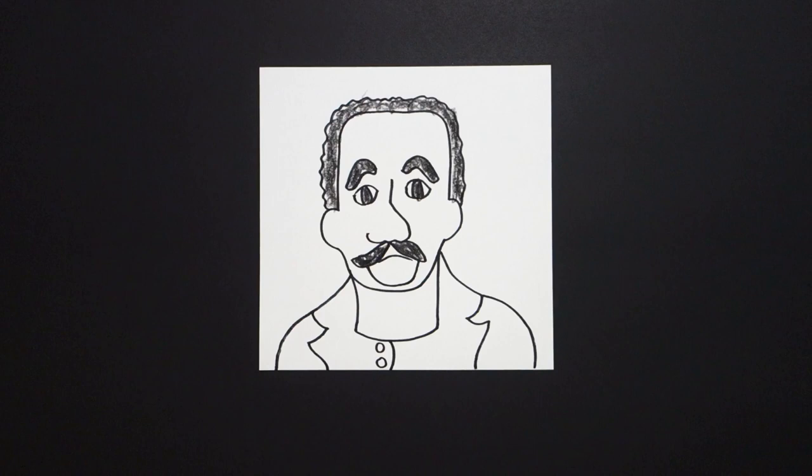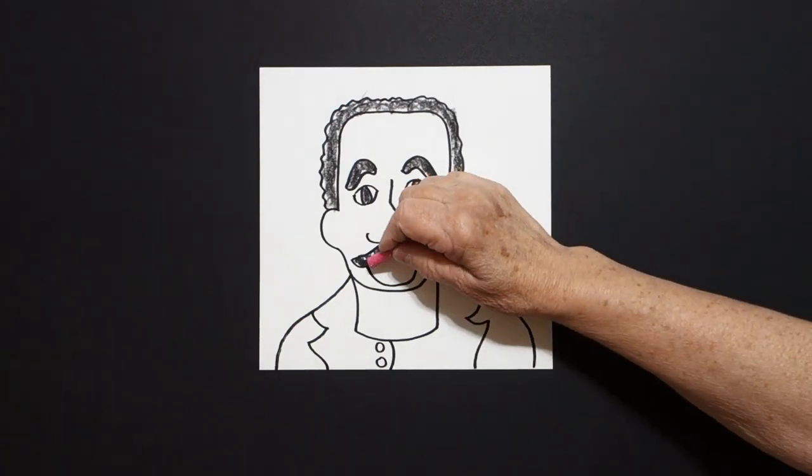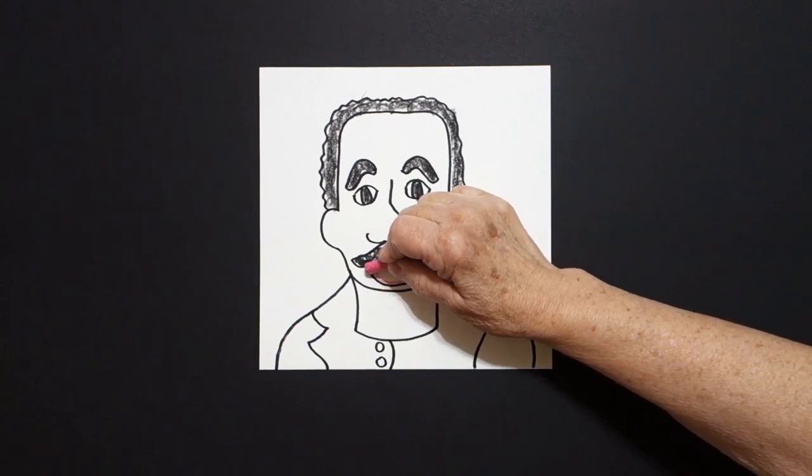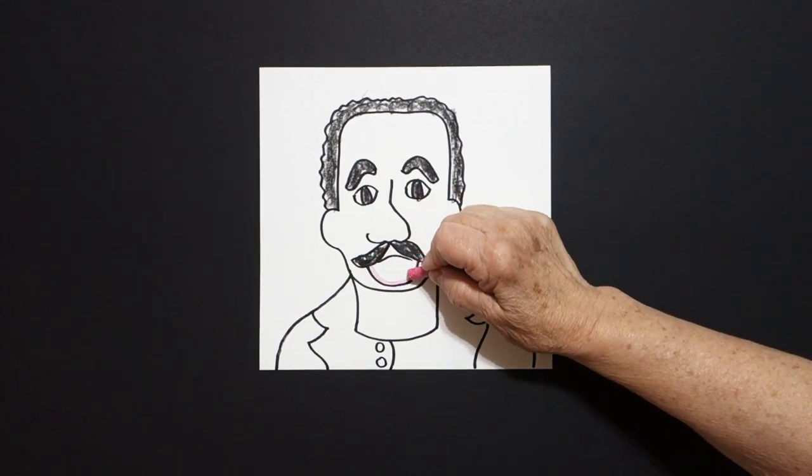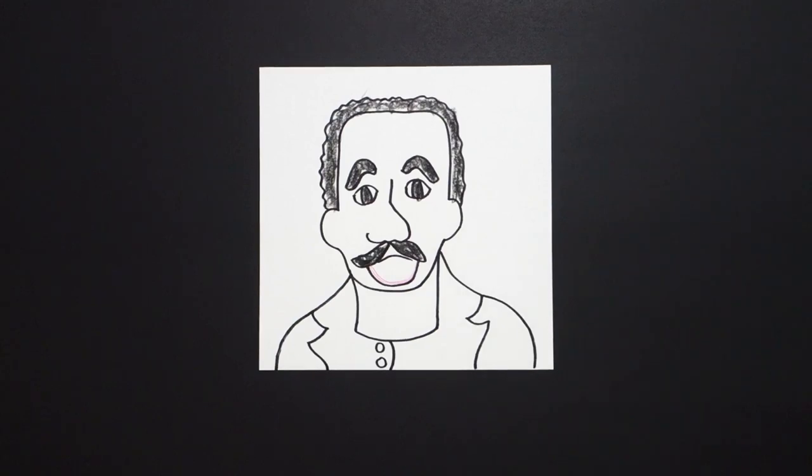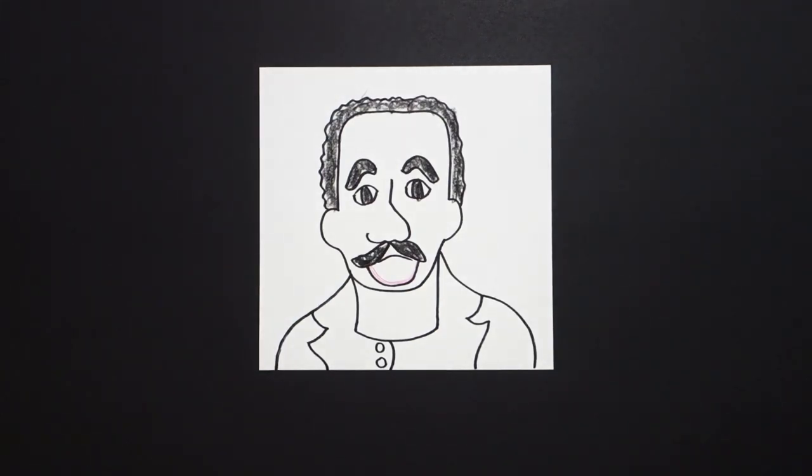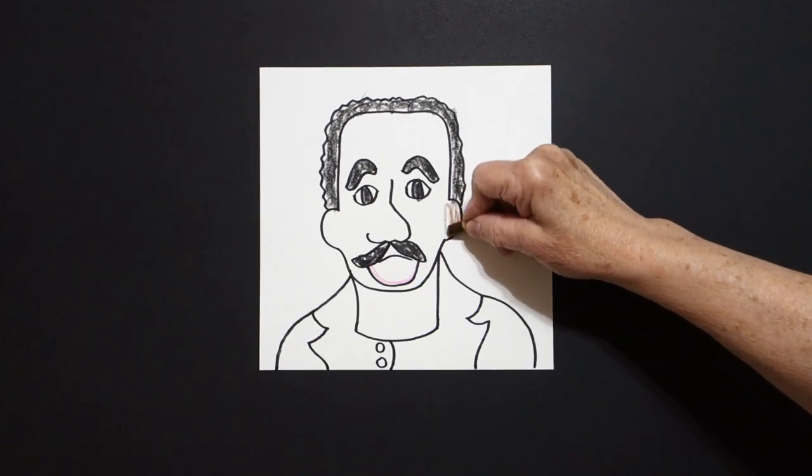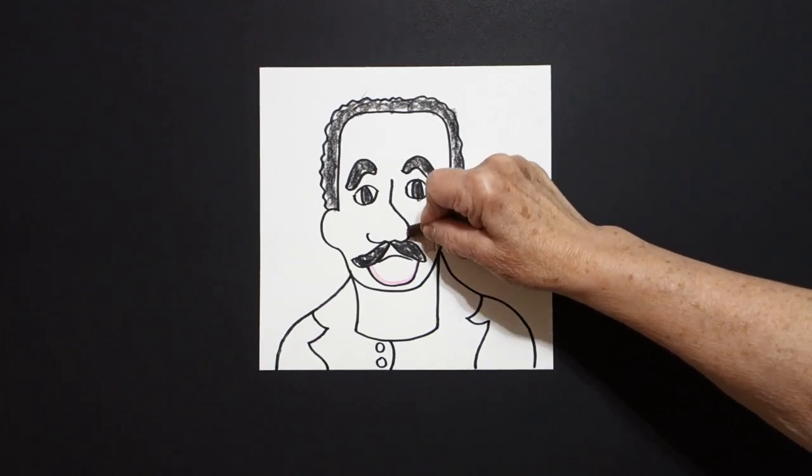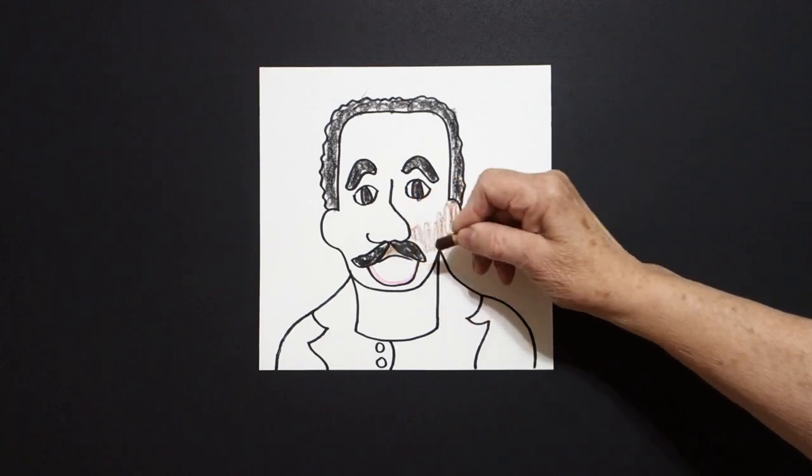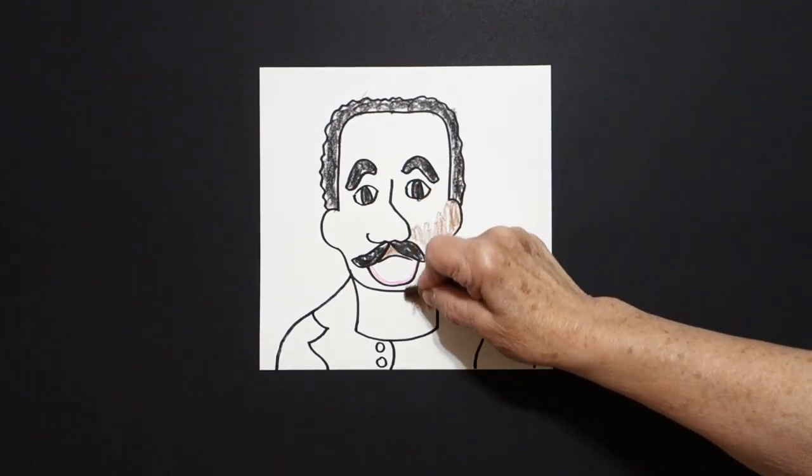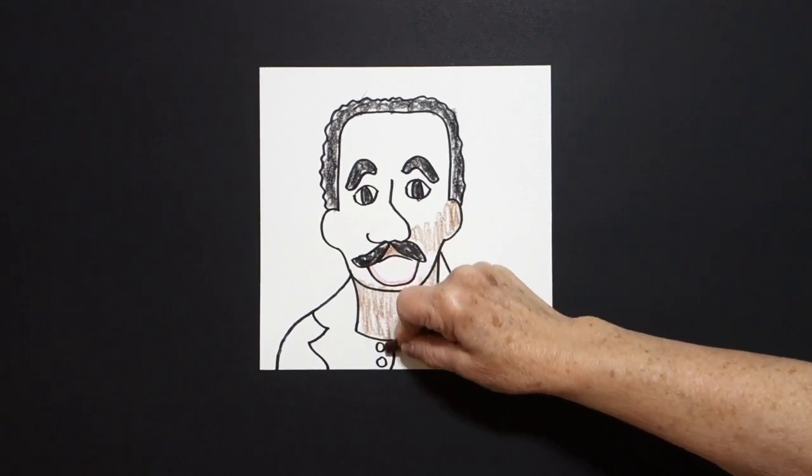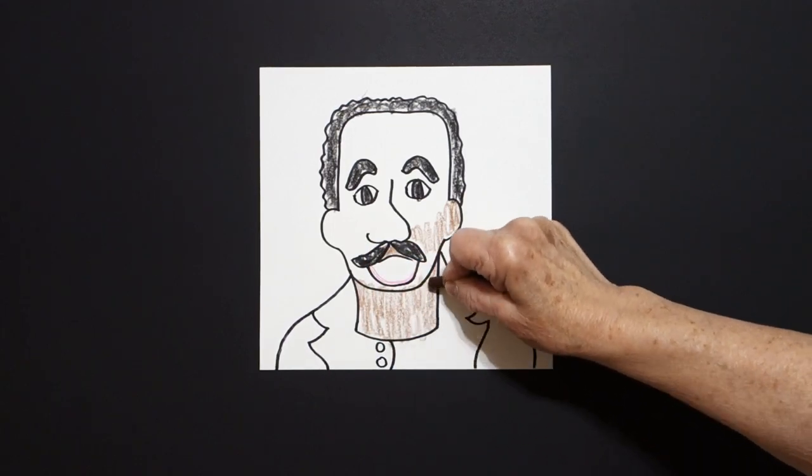Next I'm going to take my pink and I'm just going to put a line of pink down here, just to show that his mouth is open. And then I'm going to take my regular brown and I'm going to loop-de-loop all of this. Don't forget this space by his mustache. Don't forget this space. This is his neck. I'm going to do all of this brown.